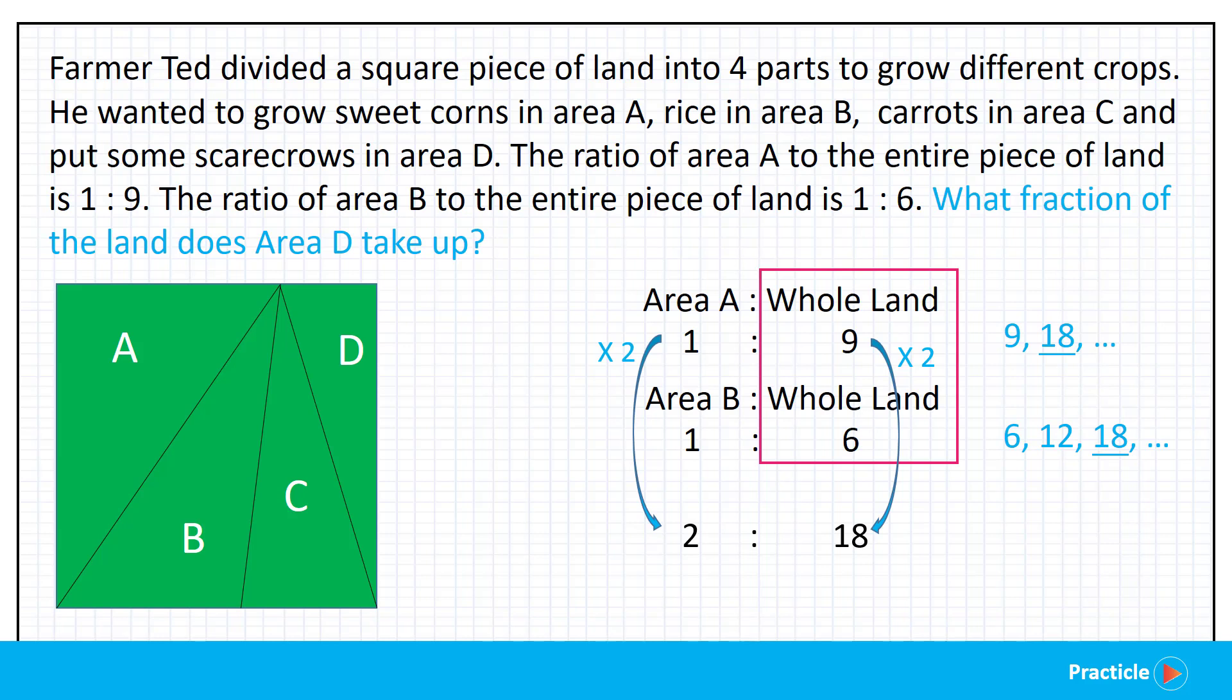Next, let's look at the ratio 1 is to 6. Can you guess what we are going to do with these numbers? If you said turn 6 into 18, you are right. So what number times 6 gives us 18? 3 times 6 gives us 18. And what do you get when you multiply 1 by 3? I hope you got 3. And here's our new ratio, 3 is to 18. And now that we have the same number of parts to represent the same piece of land, we are halfway done.